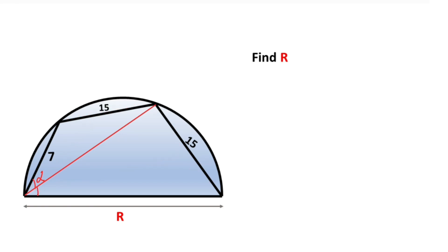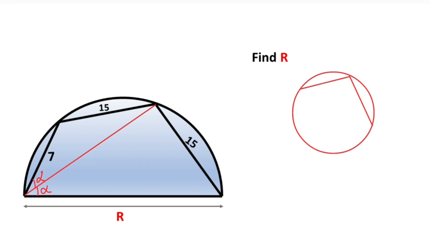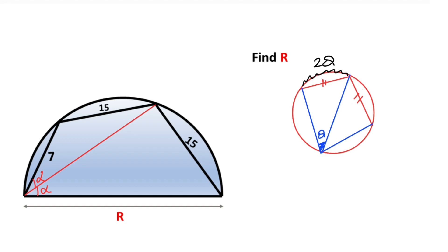Therefore this angle is also alpha. Let's remind ourselves: if we have a circle and we draw two equal chords, and call one arc theta, then the arc opposite must also equal theta. We know that if two chords have the same length, their corresponding arcs must be equal.